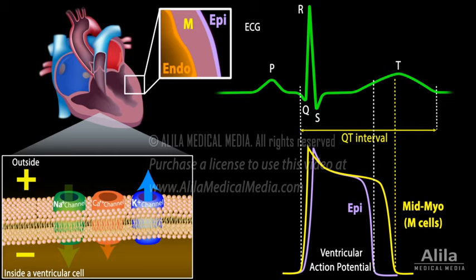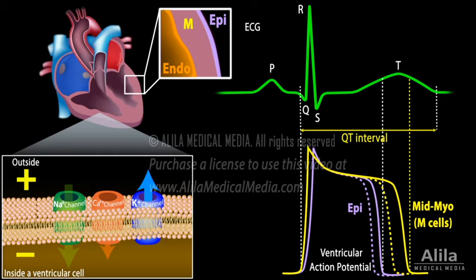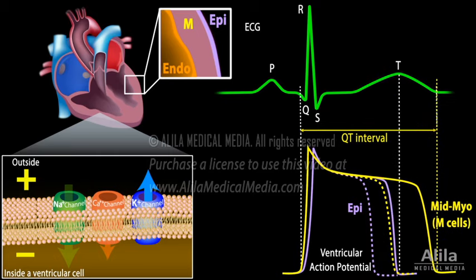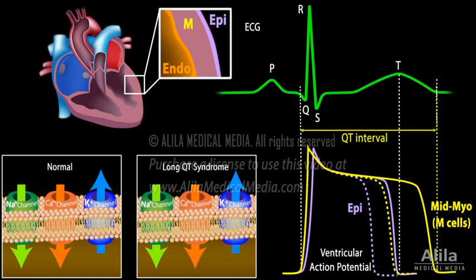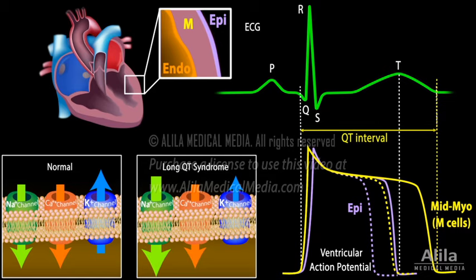Long QT syndrome is due to prolongation of underlying action potential durations, and is most commonly caused by mutations in various ion channels that affect the balance of ion flow. Specifically, a reduced outward current caused by loss of function of potassium channels, or an increased inward current caused by gain of function of sodium or calcium channels, would increase the duration of repolarization.